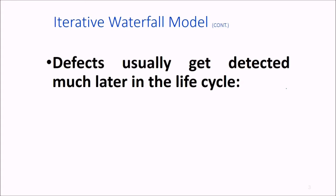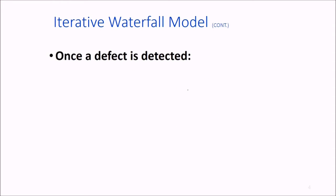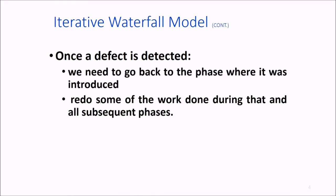Defects usually get detected much later in the life cycle, which is not desirable. For instance, a design defect might be unnoticed until the coding or testing phase. A design failure can cause project failure. Once a defect is detected, we need to go back to the phase where it was introduced and redo some of the work done during that and all subsequent phases.